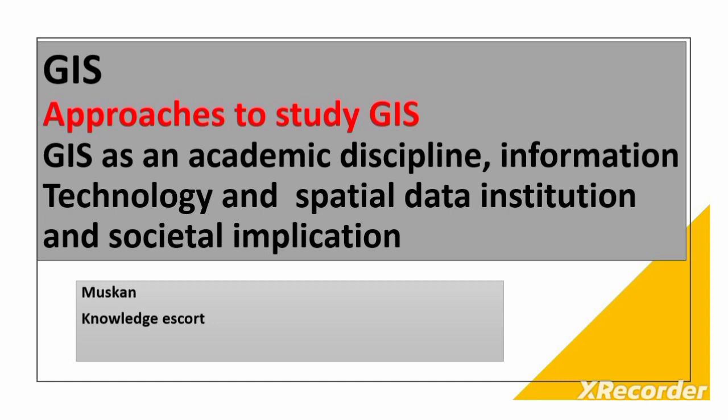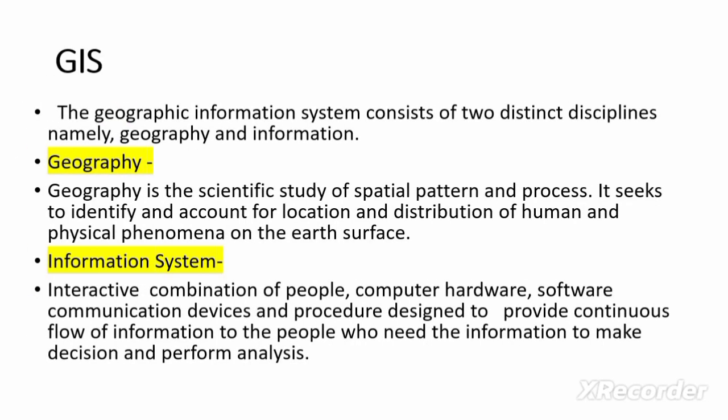Let us begin. The geographic information system consists of two distinct disciplines, namely geography and information system. GIS has two different disciplines combined: one is geography, and another one is information system.